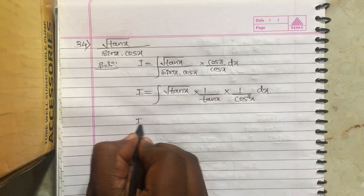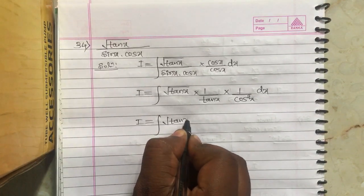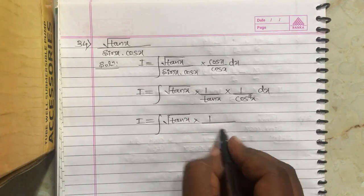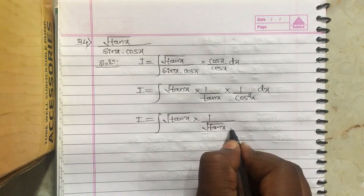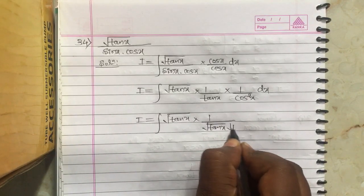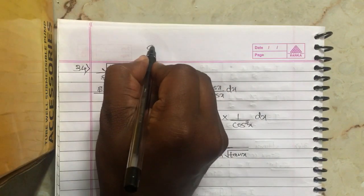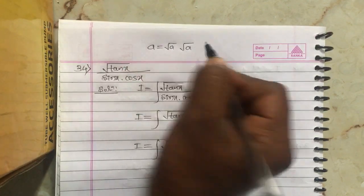Now the integral becomes root tan x into 1 divided by tan x, which can be written as root tan x into root tan x. Because we have the property A equals root A into root A.